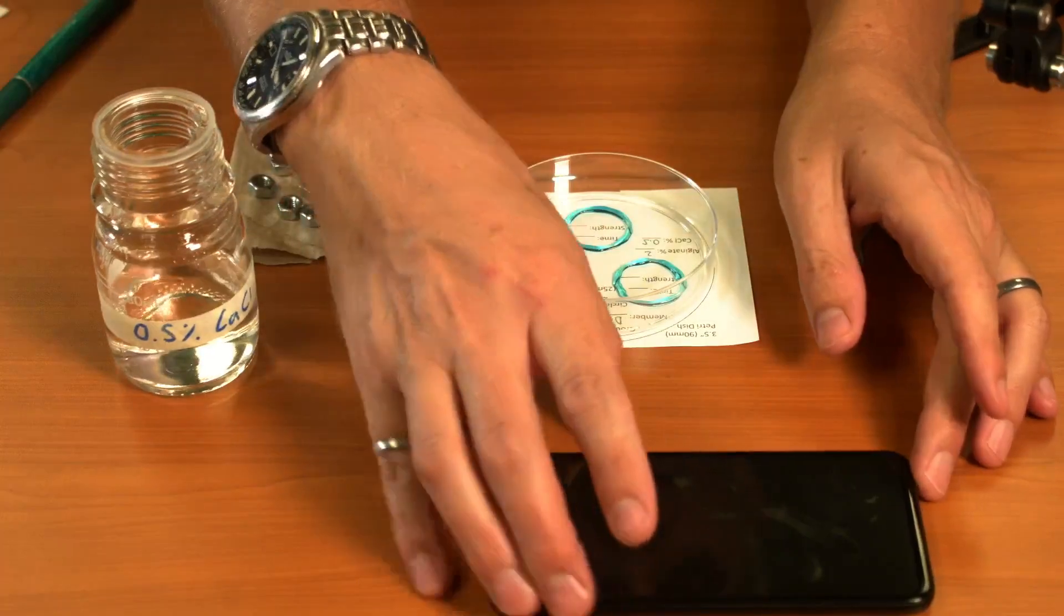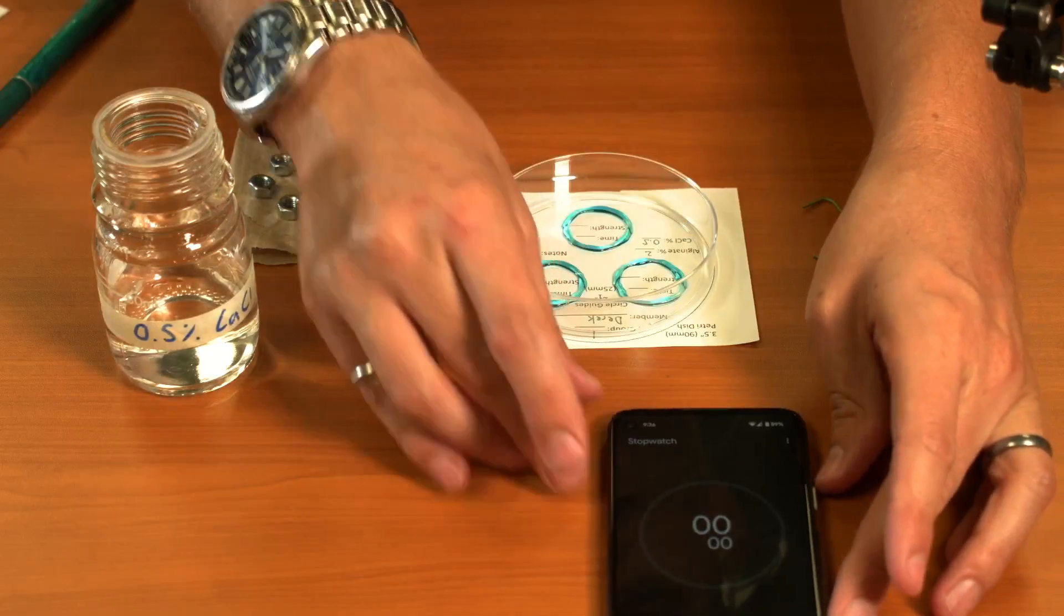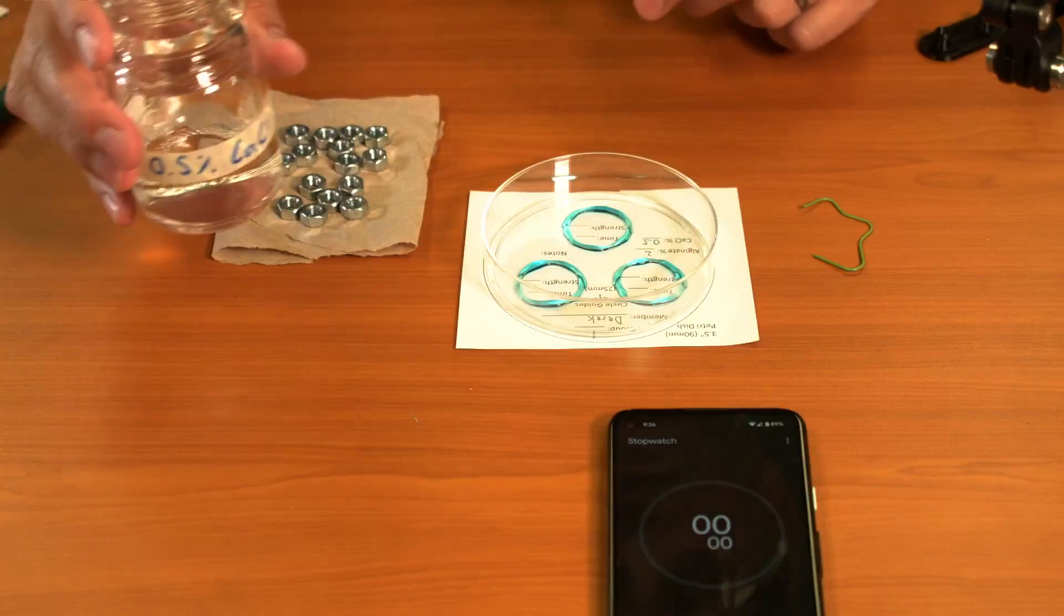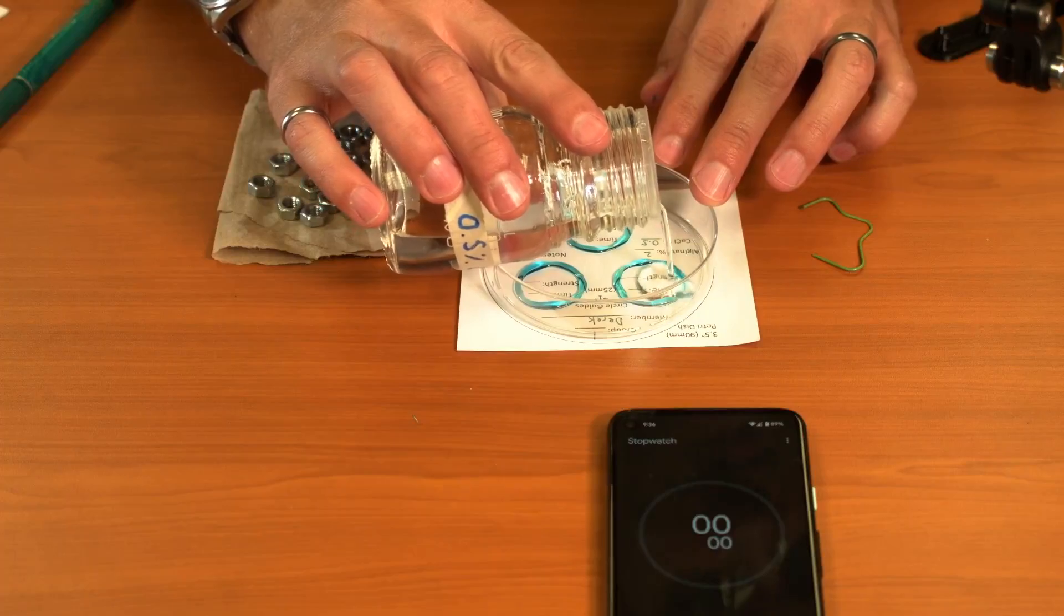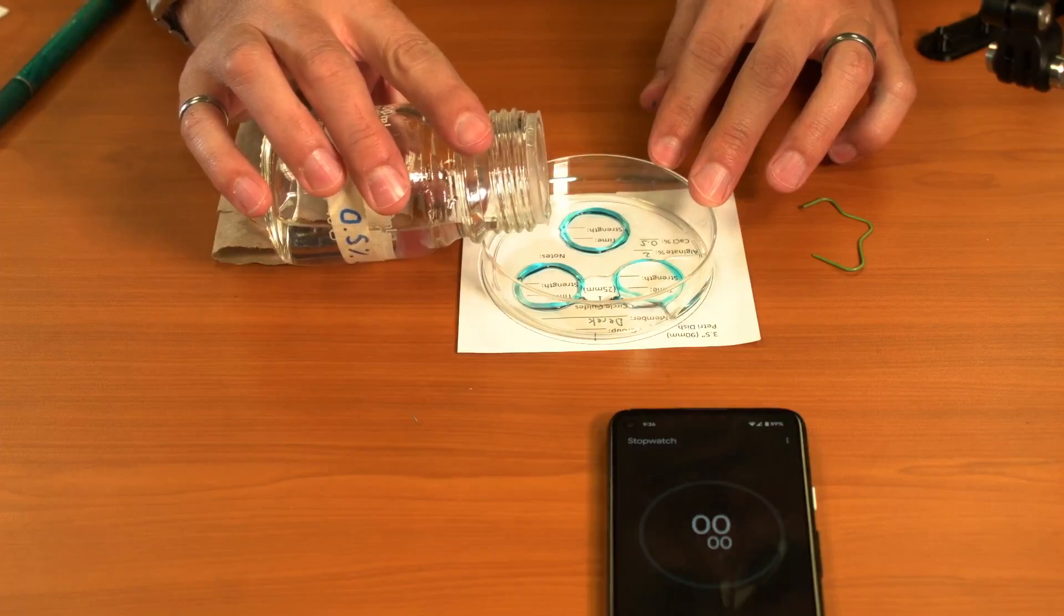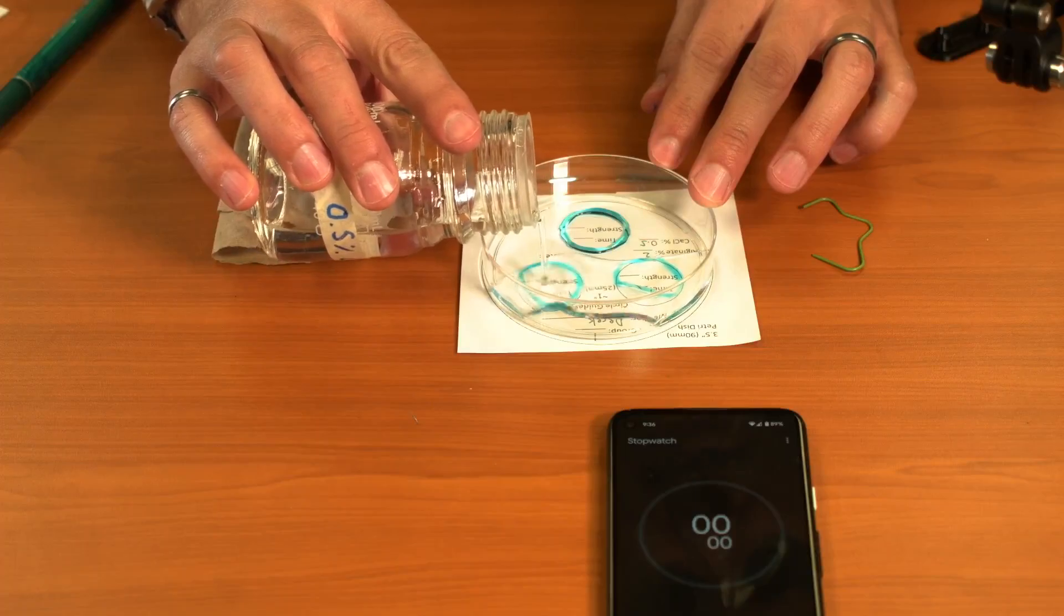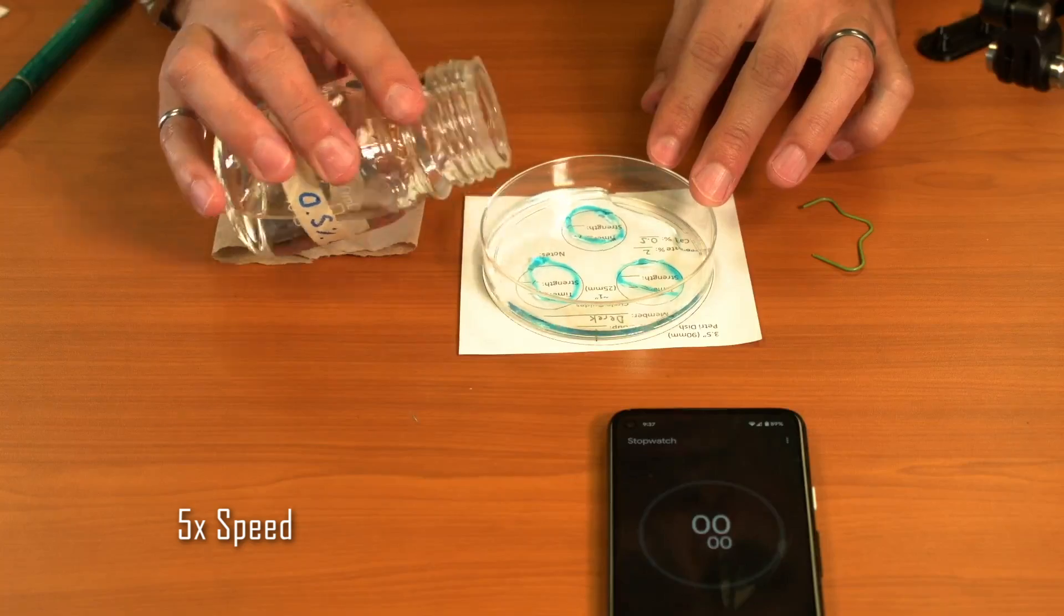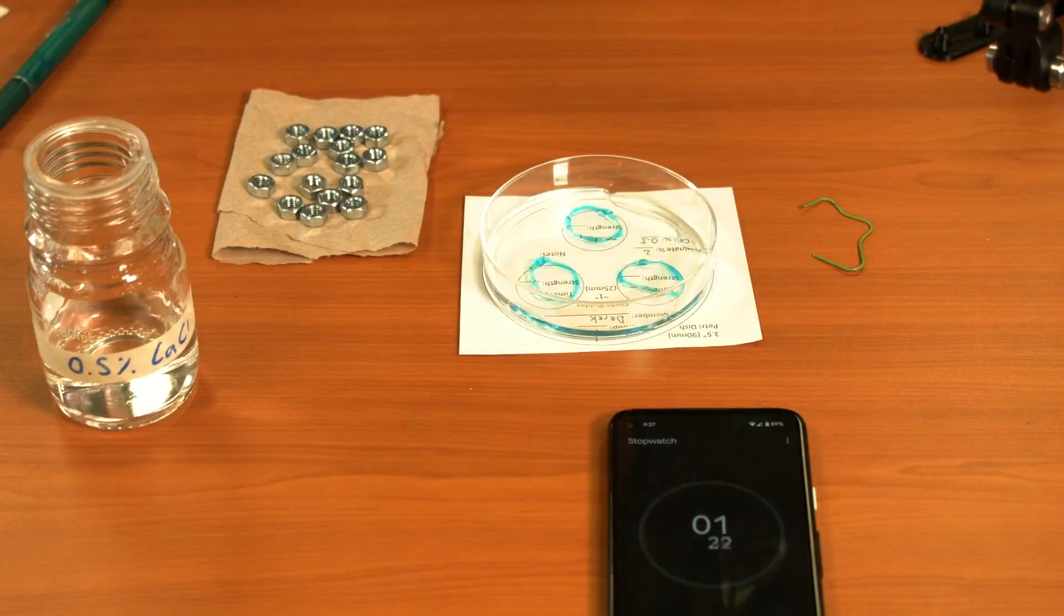I'm going to get my timer ready and then carefully pour some of my calcium chloride on top of my rings. I'm going to pour it close to the middle of the ring. I just want to get enough to cover the ring completely. I don't want to disturb the placement too much. You can see it's starting to float up in a couple of places, but I'm going to time this. I'm going to let it sit for one minute.